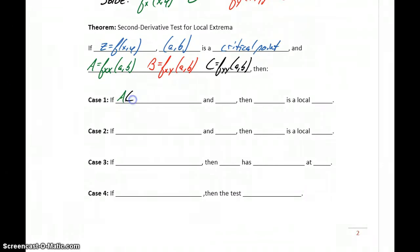If our result, A times C minus B squared is greater than zero, and our value A is less than zero, then f(a,b) is a local maximum.